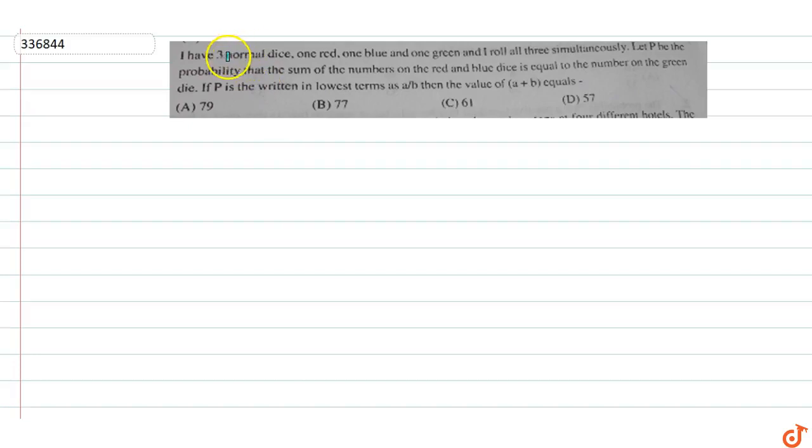In this question, I have three normal dice: one red, one blue, one green. I roll all three simultaneously. The total possibilities are 216.